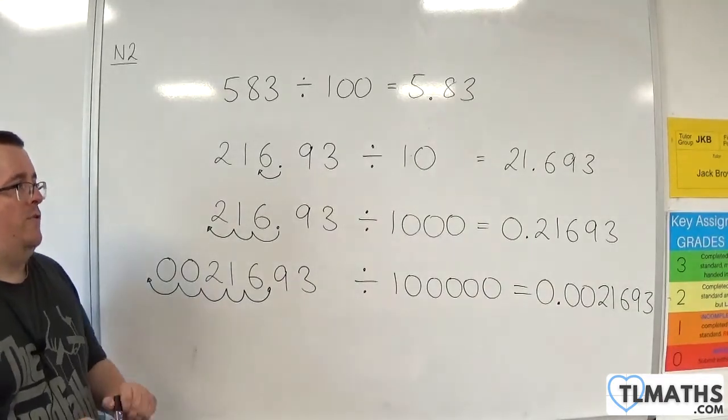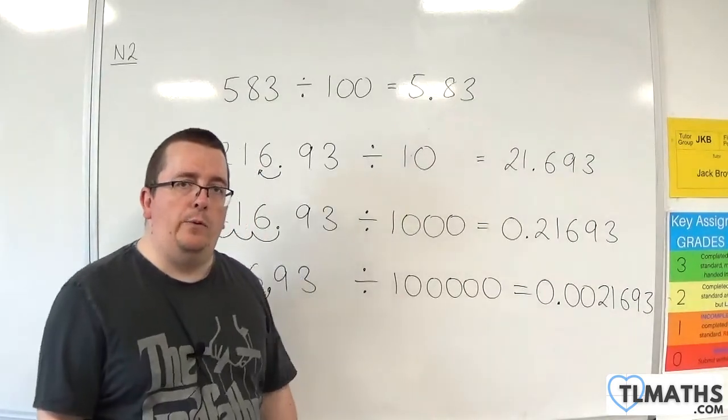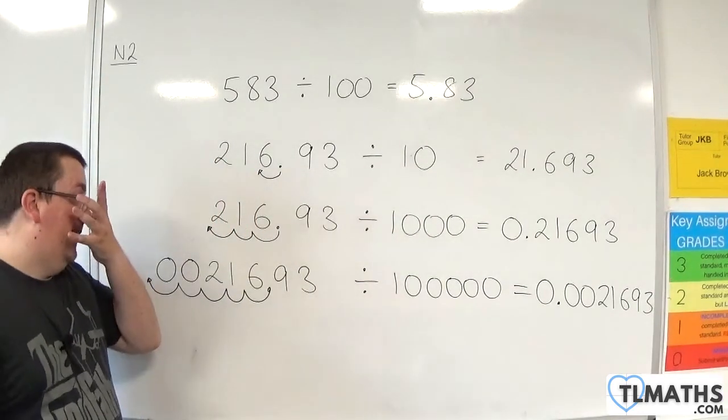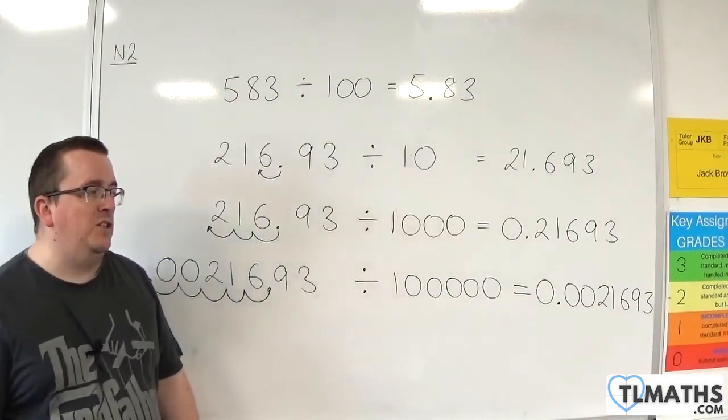And so that is how we can deal with dividing by increasing powers of 10, and adding in the zeros required to the right of the decimal point.